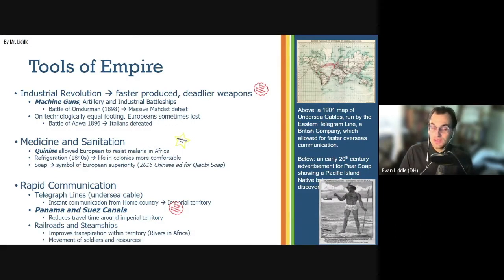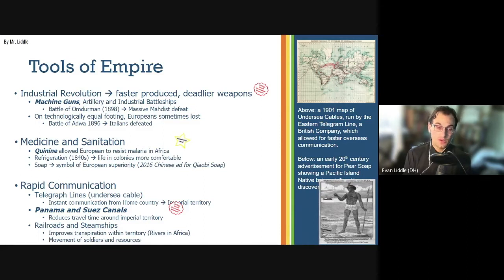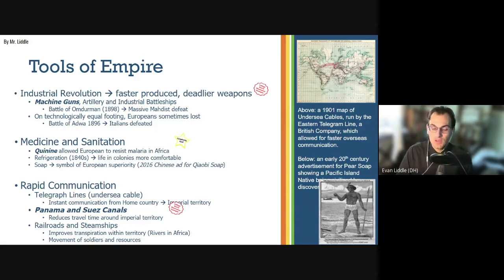However, it's worth noting this really was just about technology. When technologically on equal footing, Europeans could be totally defeated — like at the Battle of Adwa, where the Italians were defeated by a technologically equivalent military from Ethiopia. Advances in medicine and sanitation, such as quinine — an anti-malaria drug based on a tree that grows in South America — made it possible for Europeans to travel into the jungles of Africa without dying of malaria, as had happened so many times previously.